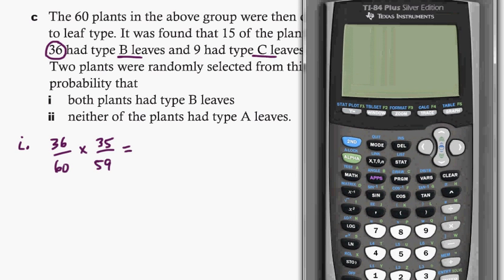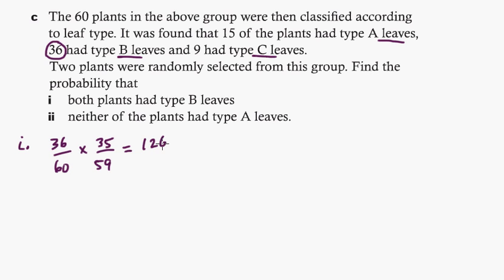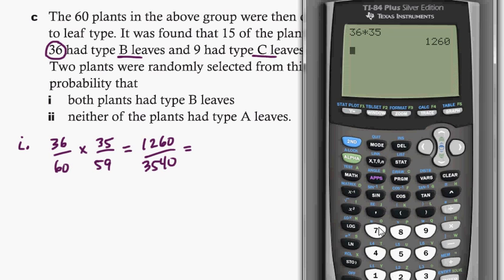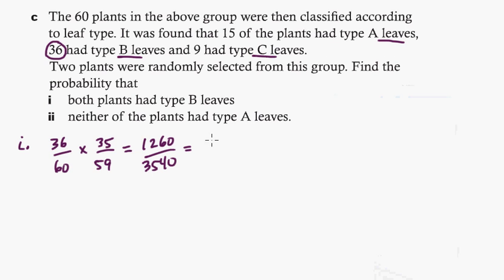So in this case, it would be, let's see, 36 times 35. I like to keep on fractions, personally, but you could change them into decimals. That's 1260, and this would be 3540. You can reduce this if you want. Let's see, 1260 divided by 3540, press enter, and then just go math, fraction, boom, 21 over 59. So 21 over 59. I can do 60 times 59 in my head, but I cannot reduce that in my head.